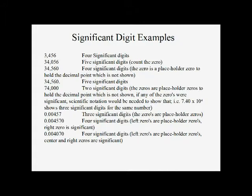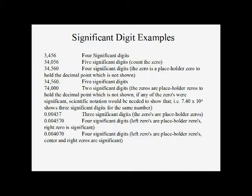Generally, the zeros that disappear when we turn a standard number into a scientific notation number are not significant. If we want to show that zero on the right is significant, we can put a decimal point there to show that we are counting that zero. 74,000 — no decimal point, so those three zeros on the right are not counted. 0.00457 — the zeros on the left are only to show us where the decimal point is, so they are not counted, giving us three significant digits. 0.004570 — zeros on the left are not counted, but the zero on the right is counted because there is a decimal point in that number, so we have four significant digits.